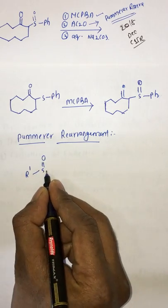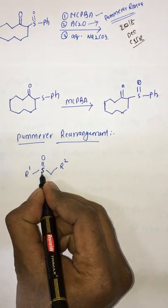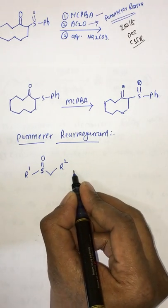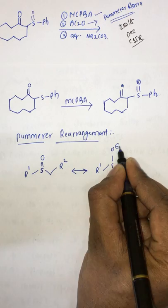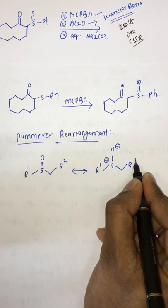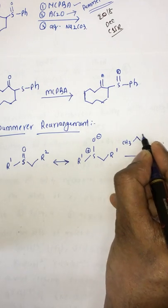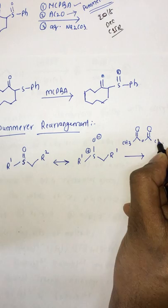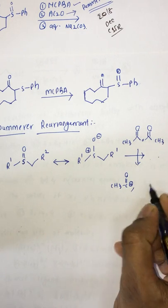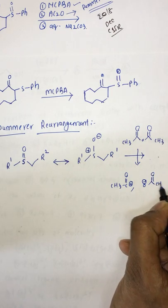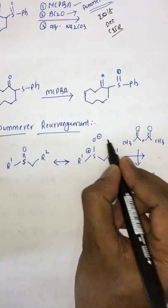I am explaining the mechanism with this starting precursor. This will exist in equilibrium with this form: O minus, S plus, and R1. Now here we have an acyl carbocation — CH3COO — and an acetate anion. So this acyl carbocation attacks this oxygen.